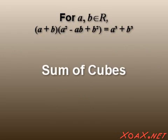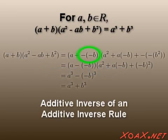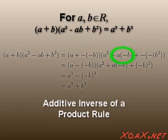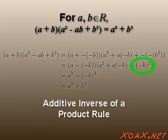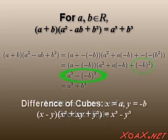The fourth formula is the sum of cubes, and it can be derived from the difference of cubes by a simple substitution. First, rewrite the left hand side using the additive inverse of an additive inverse rule twice, and the additive inverse of a product rule. We can rewrite this second term using the subtraction notation, and this last one using the additive inverse of a product rule twice. Now we can apply the difference of cubes formula.